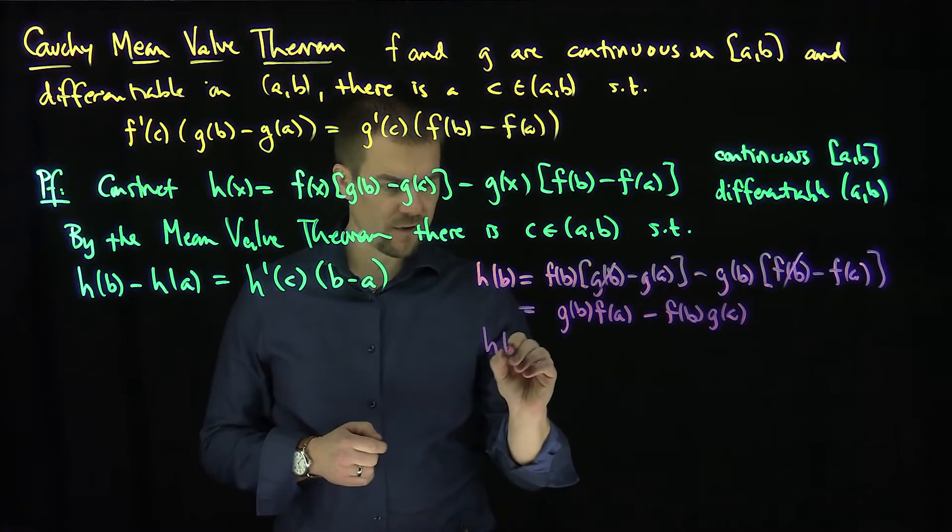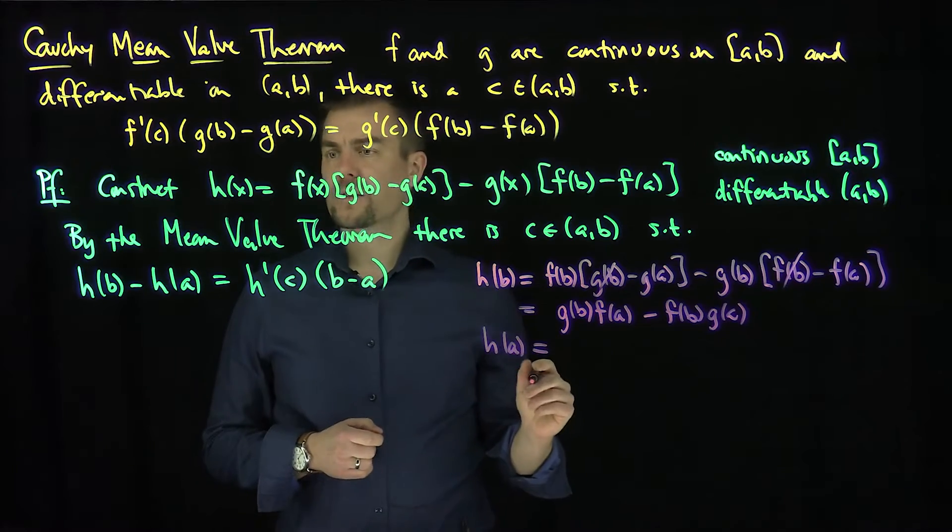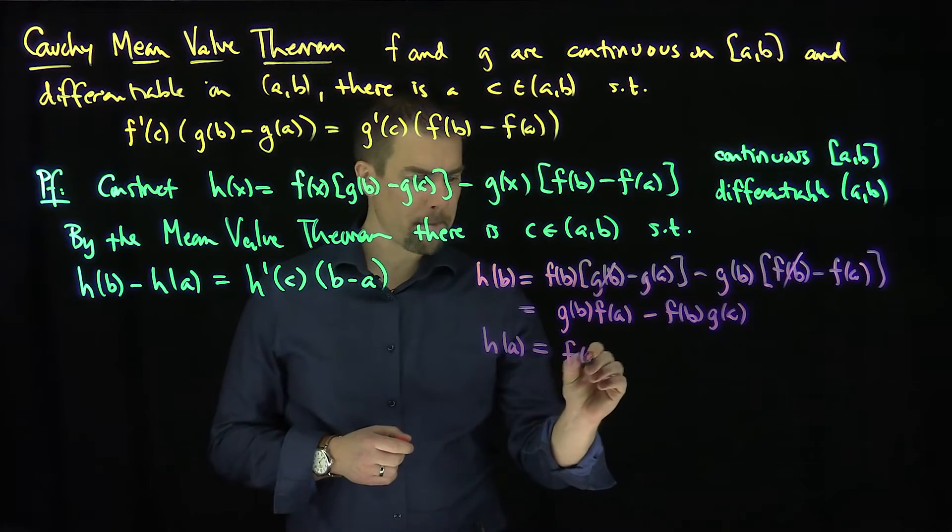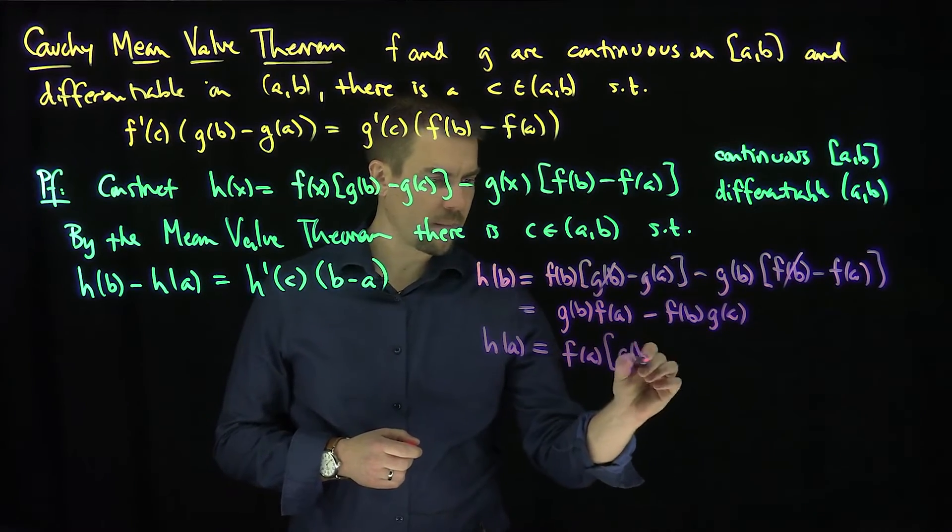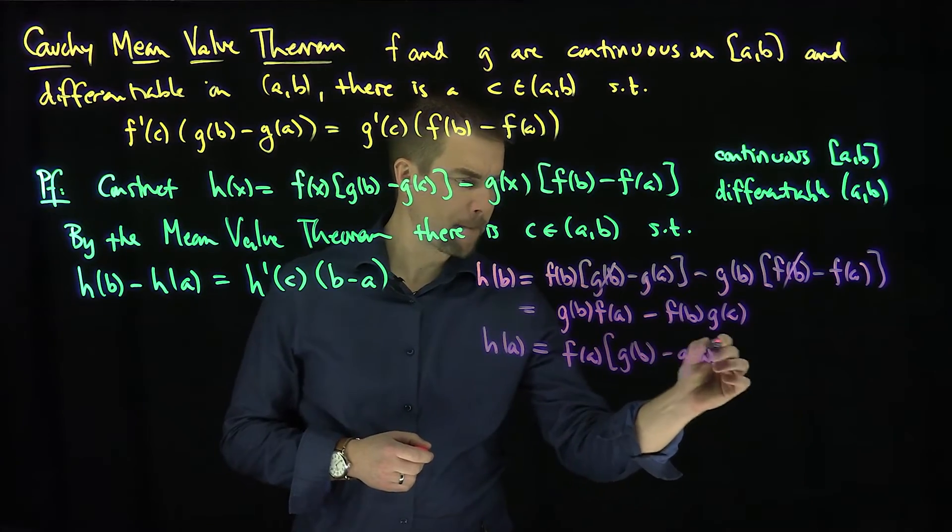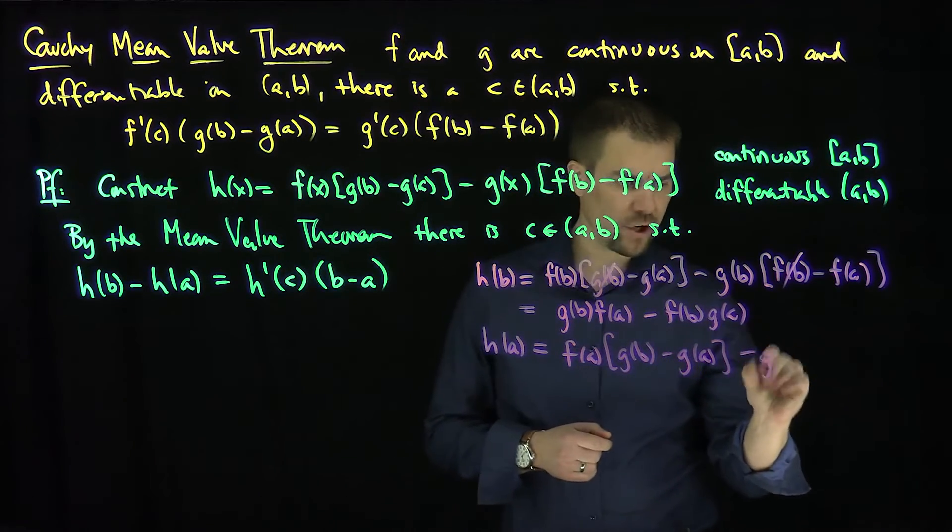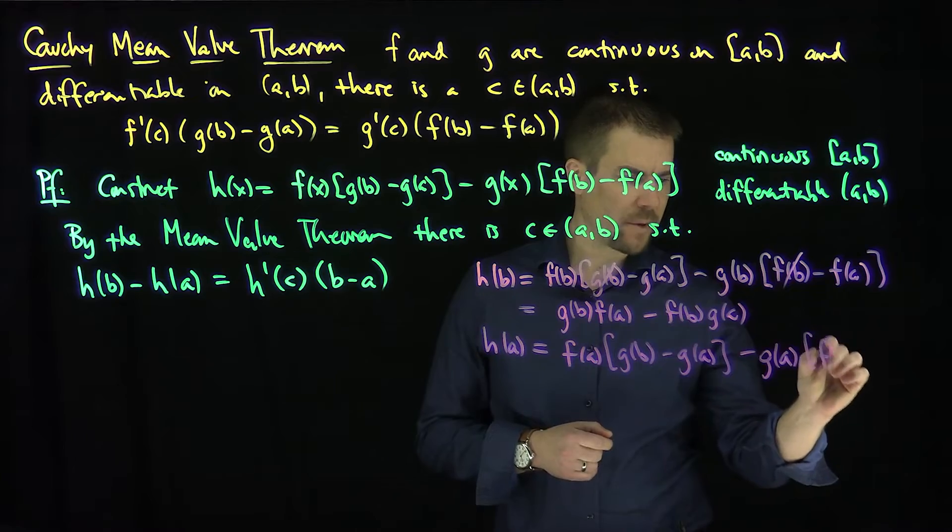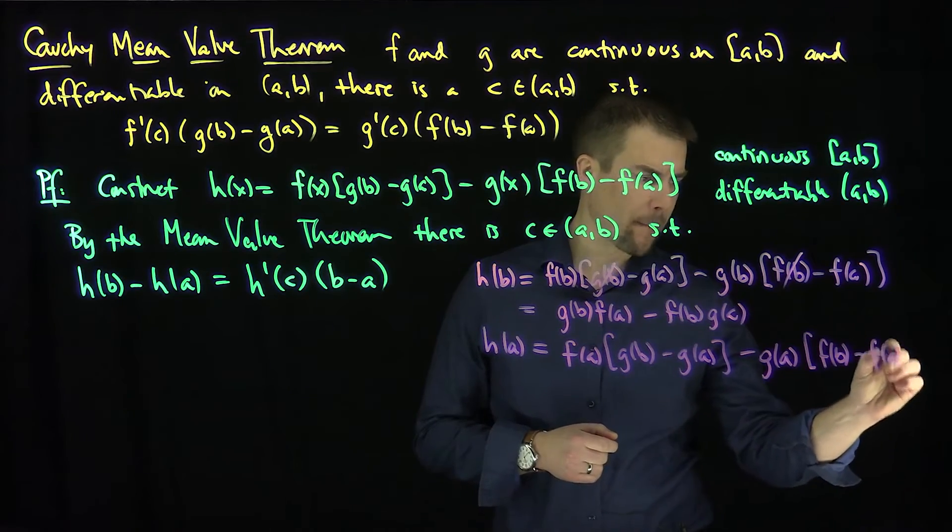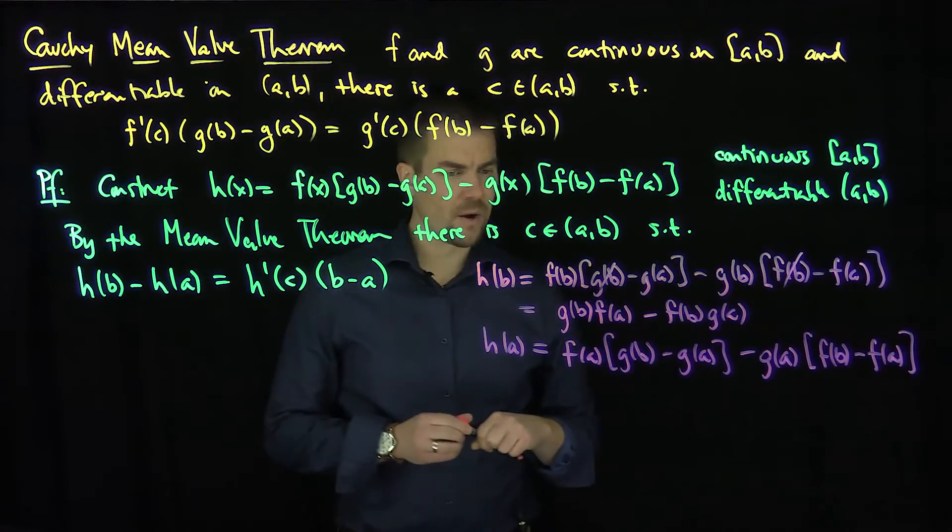Let's look at h(a). What's h(a) going to be? So h(a) is going to be f(a)[g(b) - g(a)] - g(a)[f(b) - f(a)]. And so now what happens over here?